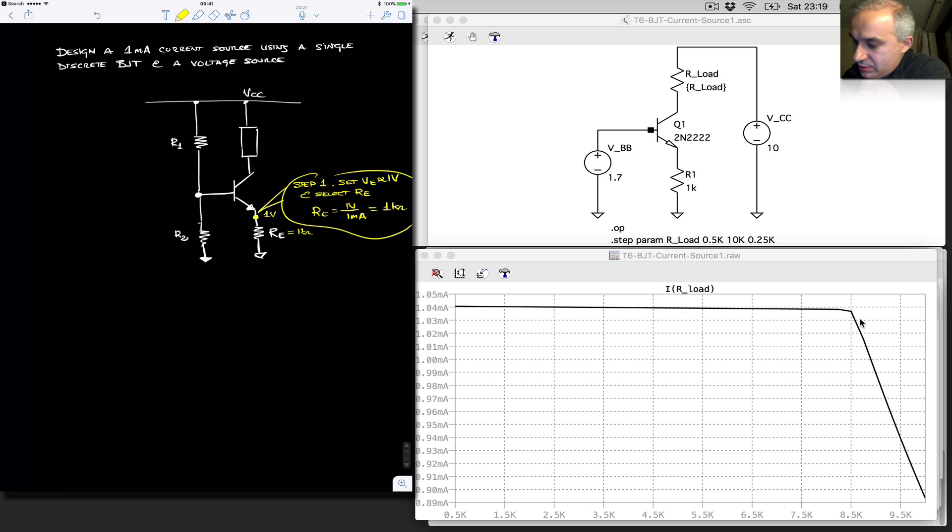Now for this to work, now we need to, step two, design the bias network to set the bias at the emitter plus 0.7. So that means to around 1.7 volts.